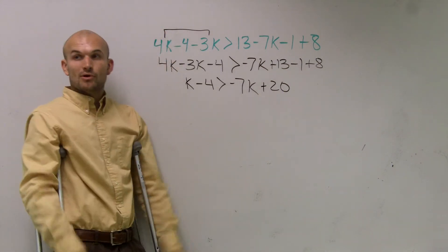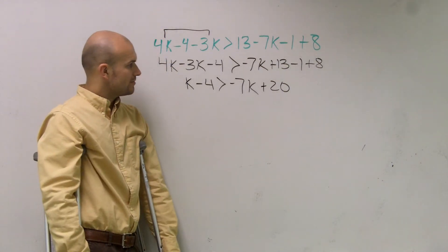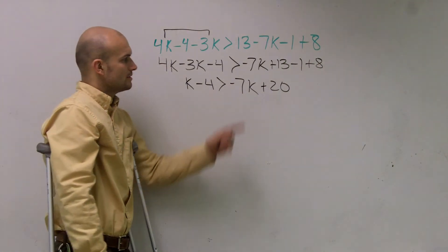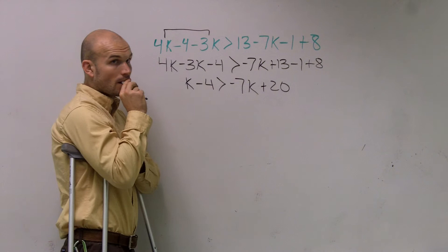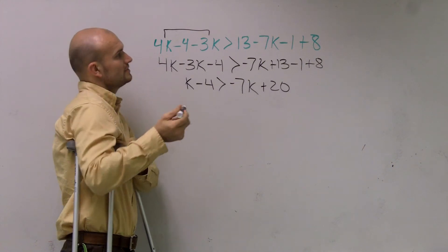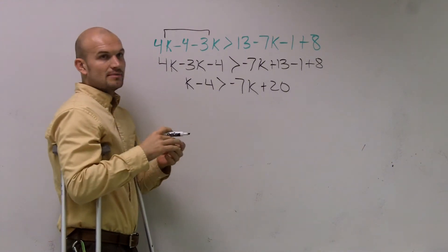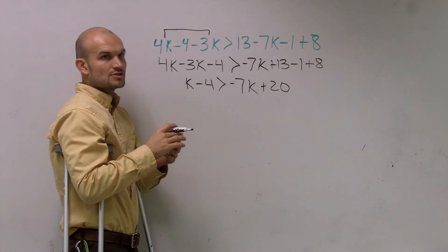Now I have a k on both sides. So what else do I need to do? Well, now what I can do is... Wait. You just did all of that together because you did 13 minus 1 plus 8. Yep, exactly. I did 13 minus 1, which is 12, plus 8, which is 20.